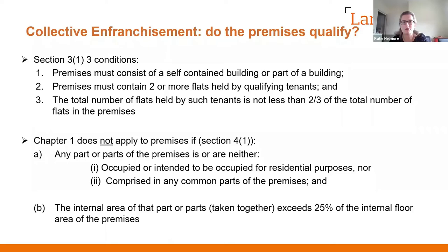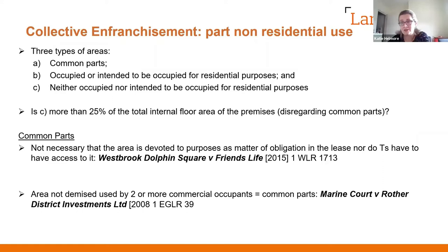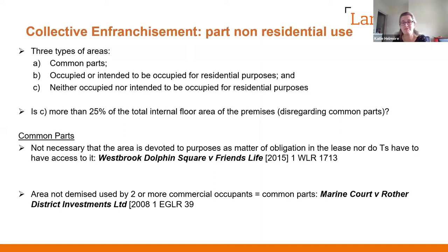It's a little more complicated than that. There are three types of areas for this proviso: common parts; areas occupied or intended to be occupied for residential purposes; and areas neither occupied nor intended to be occupied for residential purposes. What you're looking for is whether category C is more than 25% of the total internal floor area of the premises, disregarding common parts. That's quite important because people will often lump commercial common parts in with category C — that isn't right and it will skew your percentages. On residential purposes: it doesn't mean only home or dwelling; it means the usual activities of living, sleeping, eating, and washing.